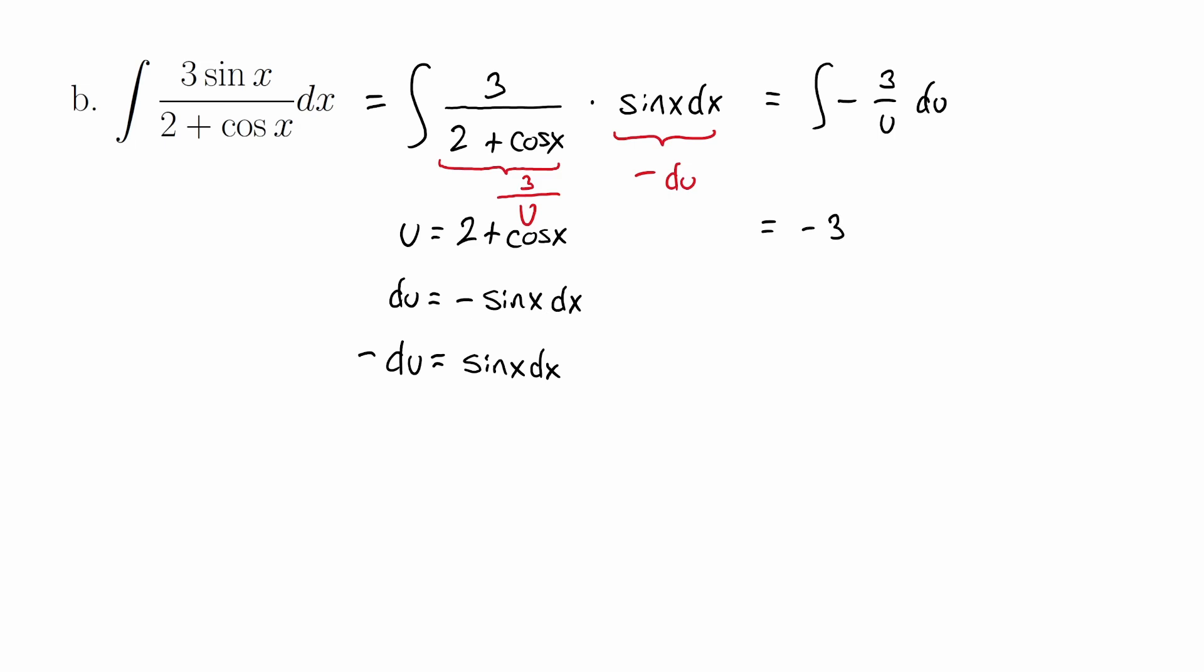That will integrate—negative 3 is a constant, and 1 over u integrates to natural log, so we get natural log of u. We just need to back substitute u as our substitution, which was 2 plus cosine of x. So we get our antiderivative as negative 3 times the natural log of 2 plus cosine of x.